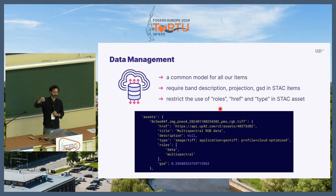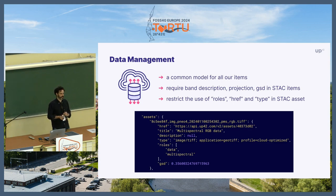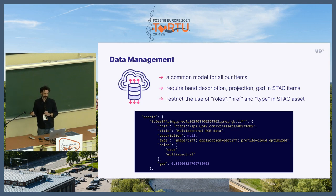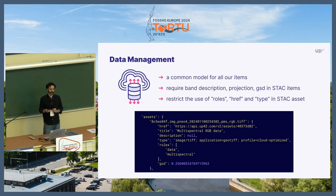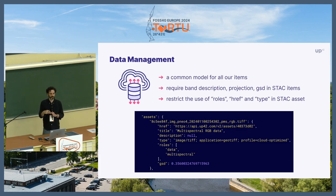On our assets, we have a type which is always the same type — we convert everything to COG. This is also verified whenever something is uploaded to storage. We also have a very precisely defined set of roles that we allow, because that enables better searchability and thorough validation ahead of processing. We allow roles such as data, metadata, preview, thumbnail, panchromatic, and multispectral. These things can be combined with each other and enable better searchability.